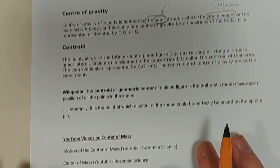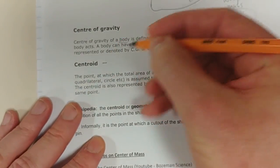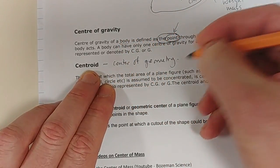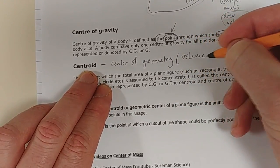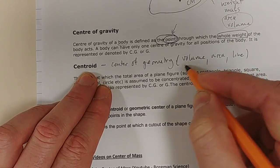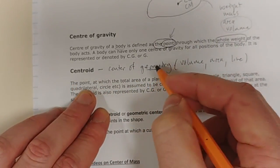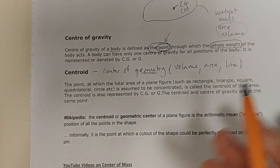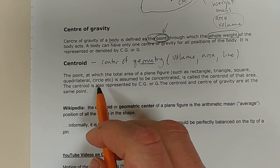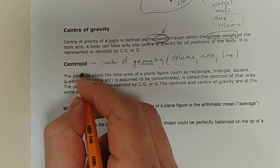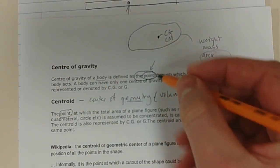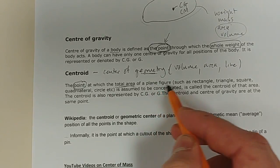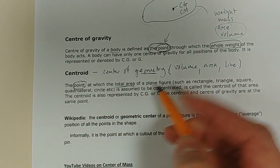Now, the centroid is just the center of geometry — essentially volume, area, or line. The center of geometry means there's no density, no mass, no gravity involved; we're purely looking at the shape of the object. And the description is again a point — there's a point at which the total area of a plane figure, such as a rectangle, triangle, or square, is assumed to be concentrated.